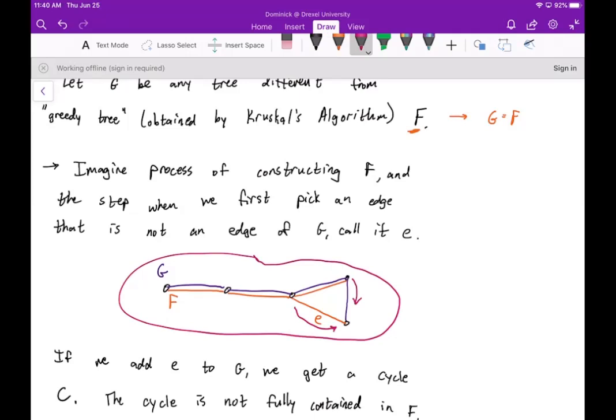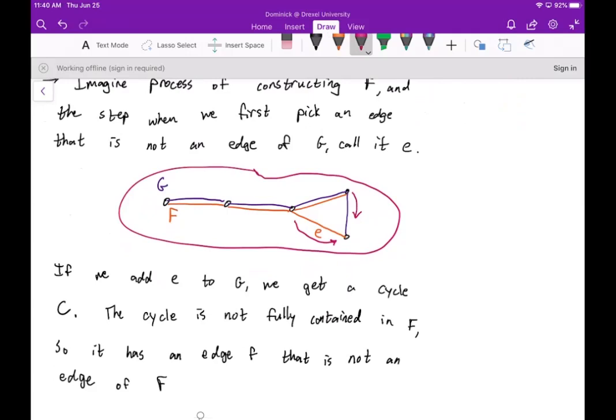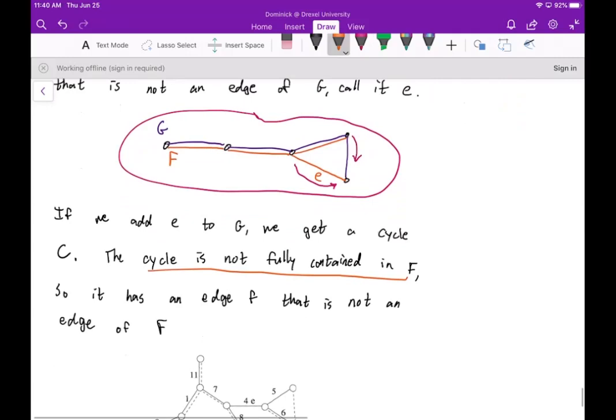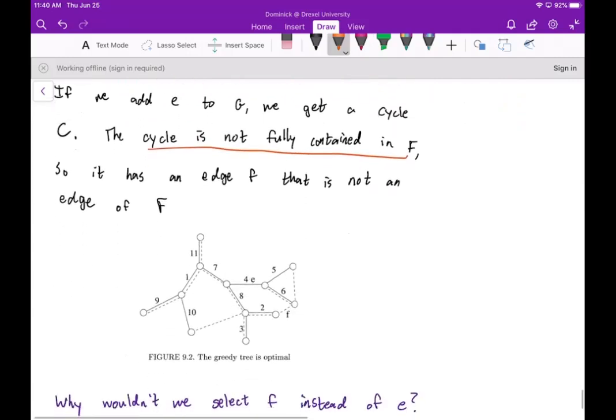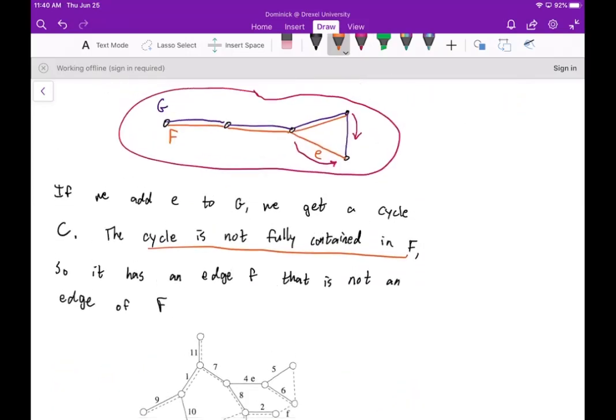Now if we add e to G, we would of course get a cycle C. Now the cycle is not fully contained in F, right? So it has an edge f that is not an edge of capital F here.